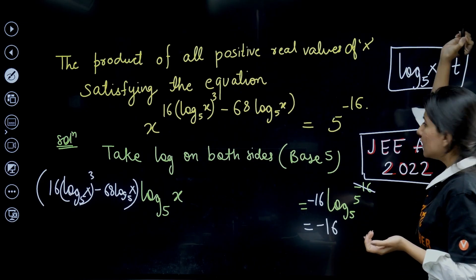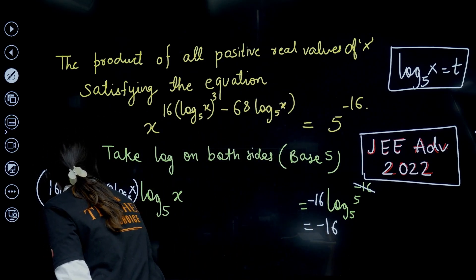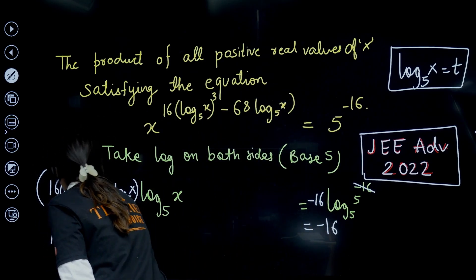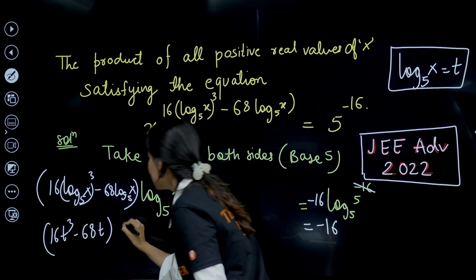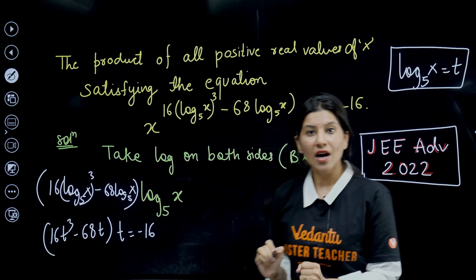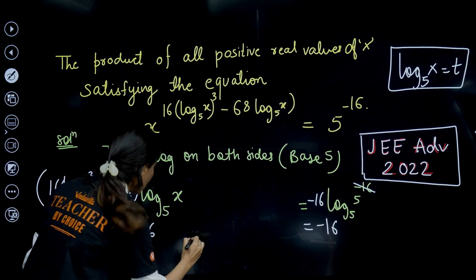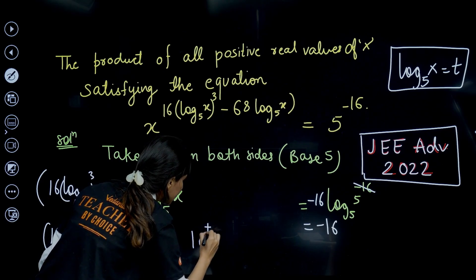It is very obvious that you have to put log x to the base 5 equals t. We are going to get 16t³ minus 68t times t which is equal to minus 16.